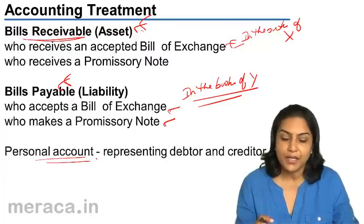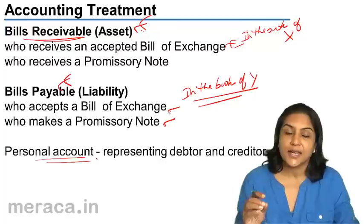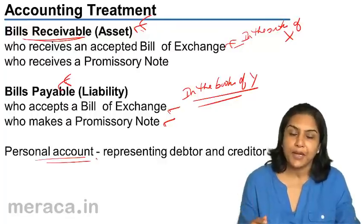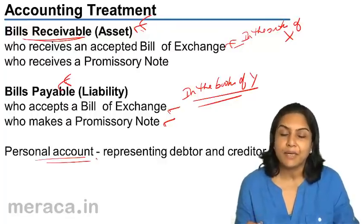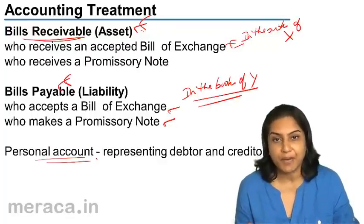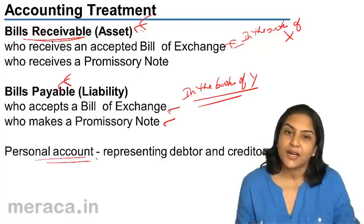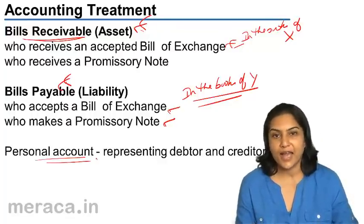Bills payable will appear on the liability side of the balance sheet under current liabilities.